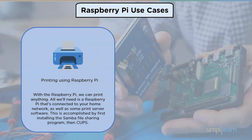Printing using a Raspberry Pi. With the Raspberry Pi we can print anything. All we need is a Raspberry Pi connected to your home network as well as some print server software. This is accomplished by first installing the Samba file sharing program, then CUPS — which stands for Common Unix Printing System — and includes printer drivers as well as a management console.